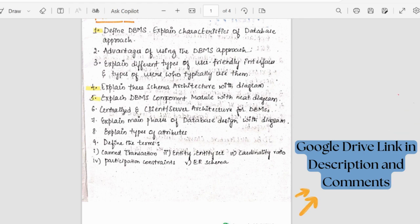Then here we have the component module with neat diagram. This diagram comprises of all the users, compiler, DBA command, storage database and all.